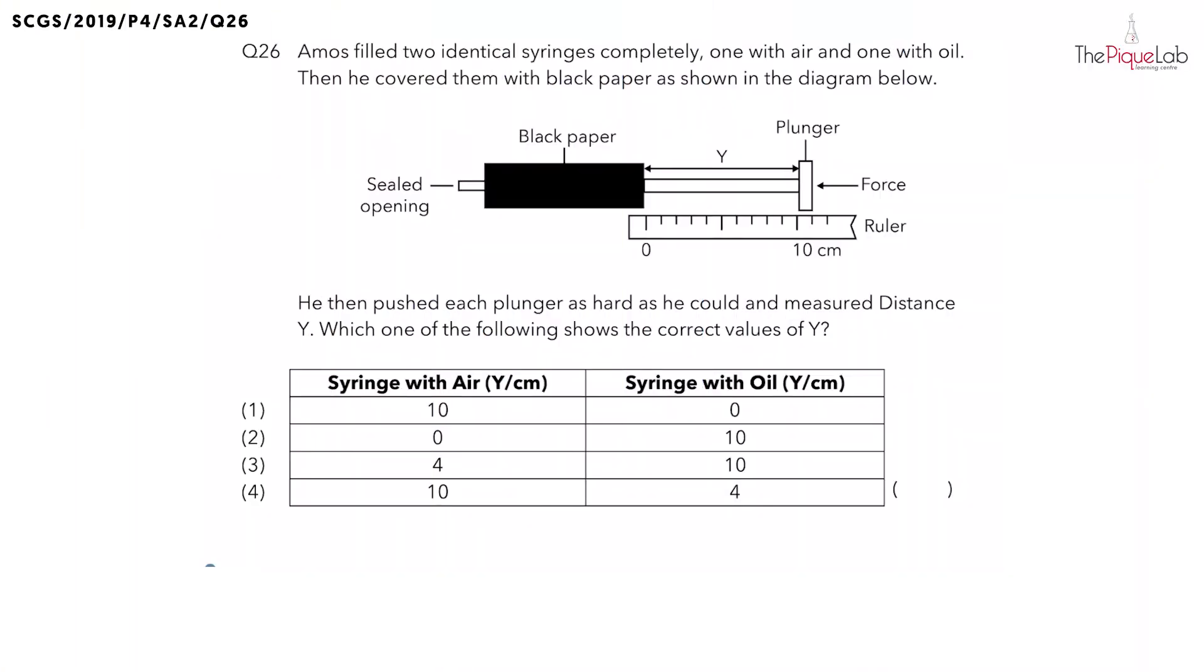Question 26. Amos filled two identical syringes completely, one with air and the other with oil. Next, he covered them with black paper as shown in the diagram below.